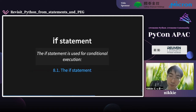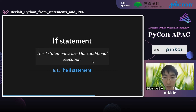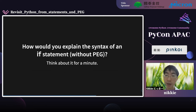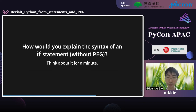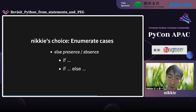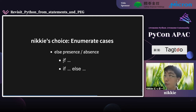First, the if statement. The reference says that the if statement is used for conditional execution — and that is how we use it. Here's a question: how would you explain the syntax of an if statement? I will introduce what I would do and then look at how it is actually defined in PEG.